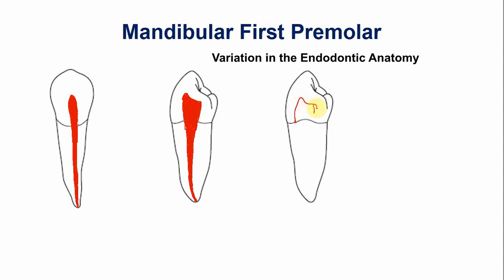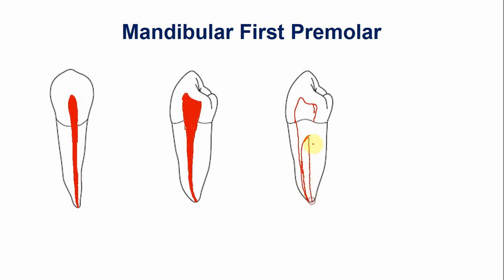In that case the pulp chamber is the same, but there are two canals with separate apical openings. This canal is the buccal canal and this is the second canal which is the lingual canal, and both of them have a separate apical foramina.